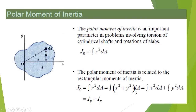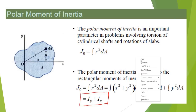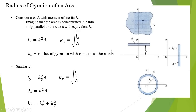The polar moment of inertia is simply equal to J_O equals I_Y plus I_X. Another very important concept is what we call the radius of gyration of an area.